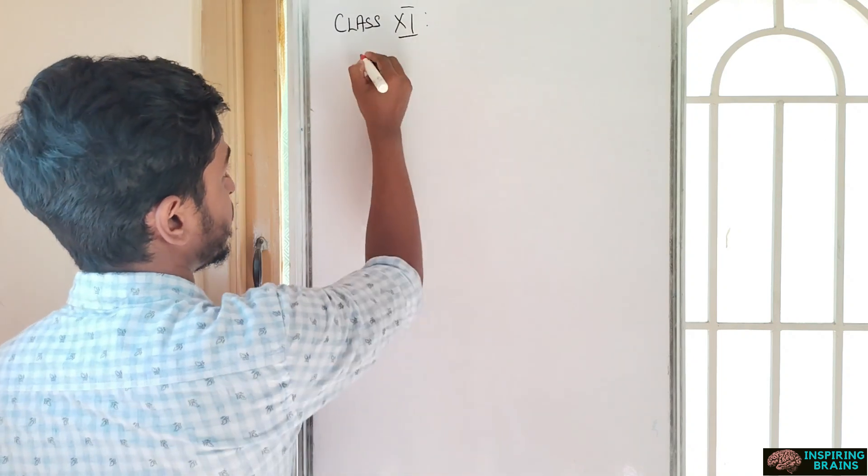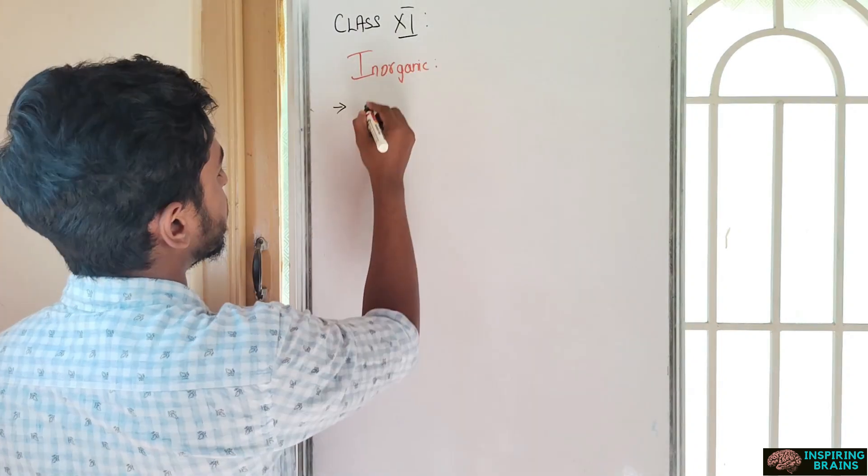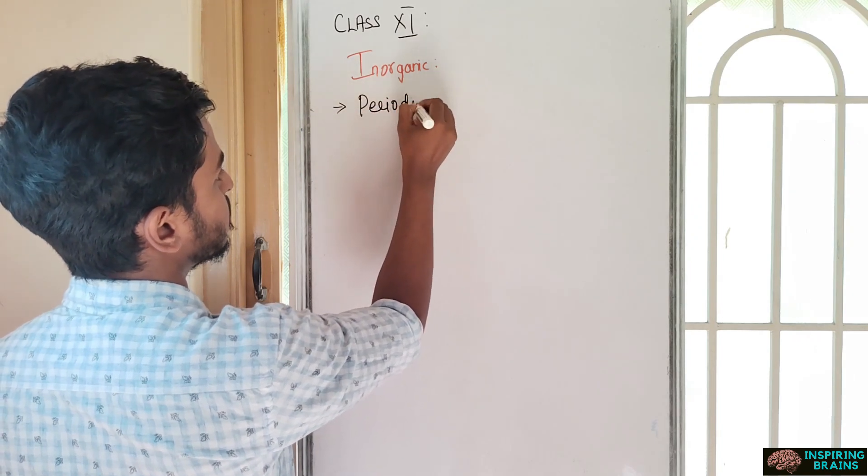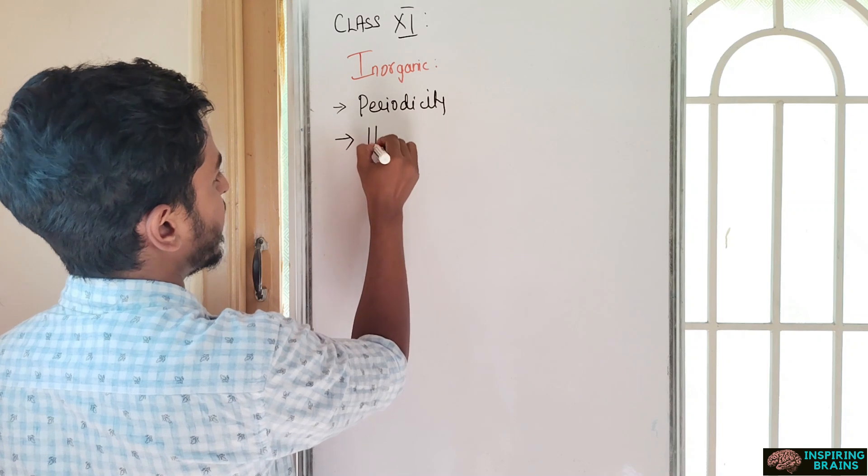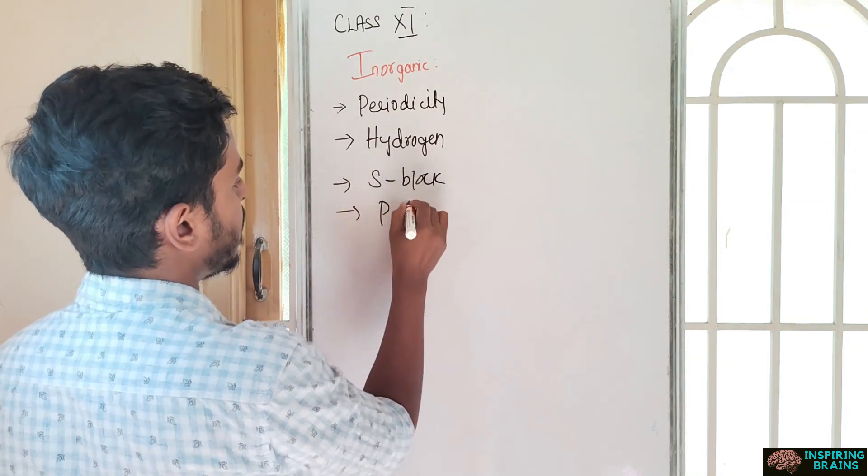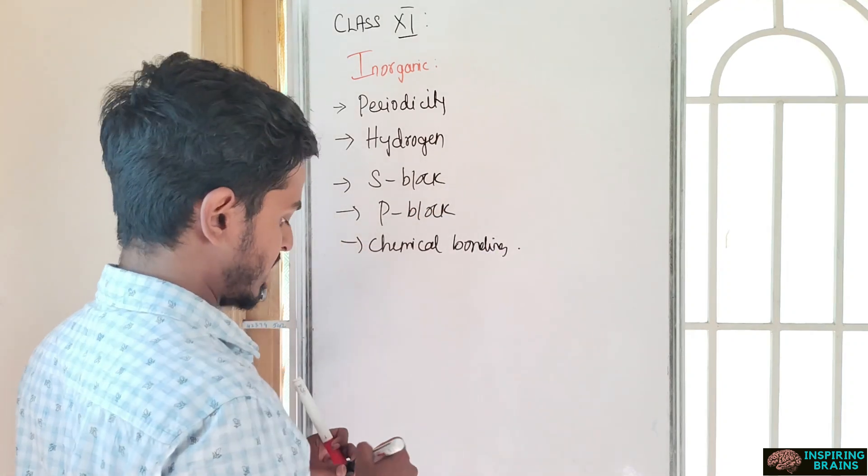So class 11, first I'm going with inorganic chapters. Classification of elements and periodicity, second is hydrogen, third S block, P block part 1, chemical bonding - inorganic of class 11.